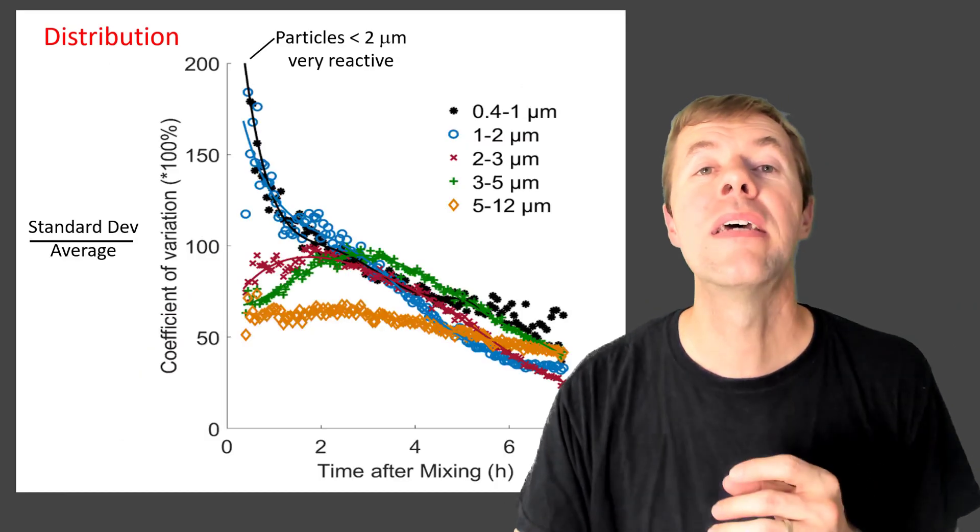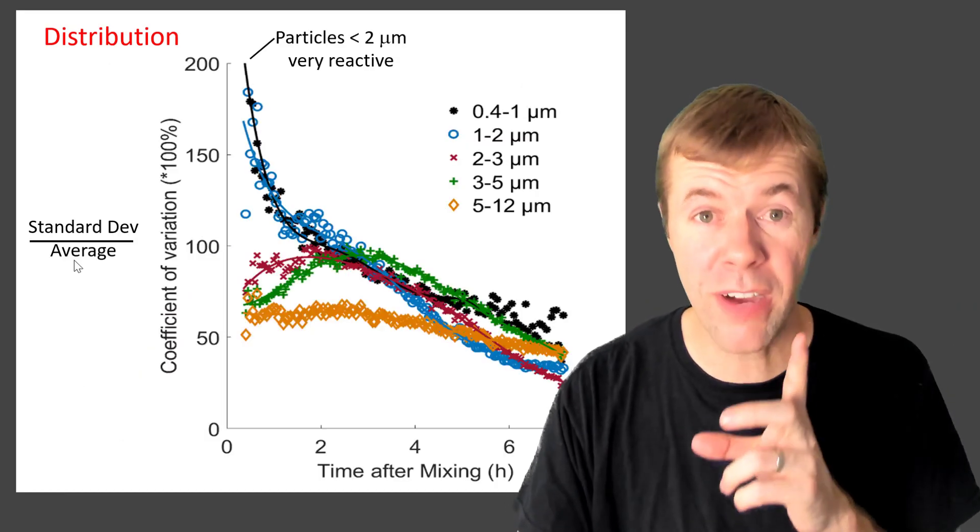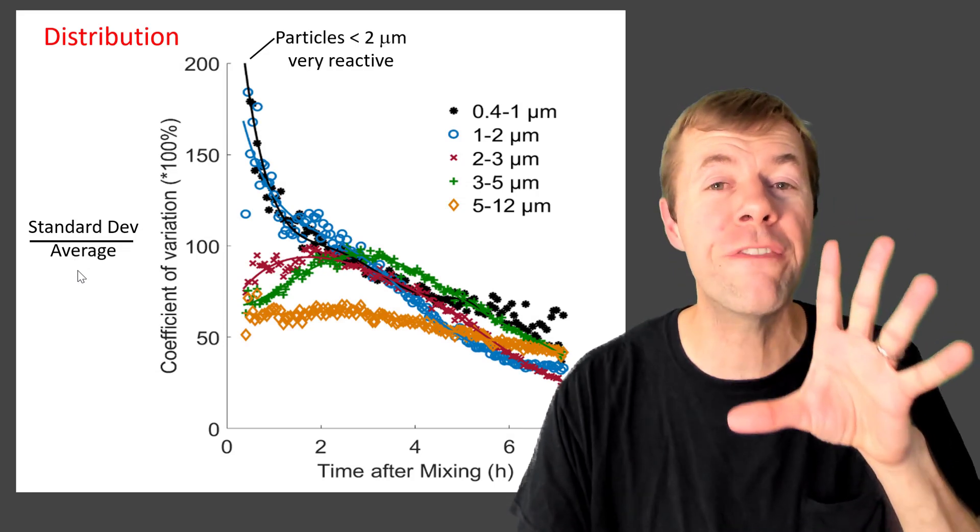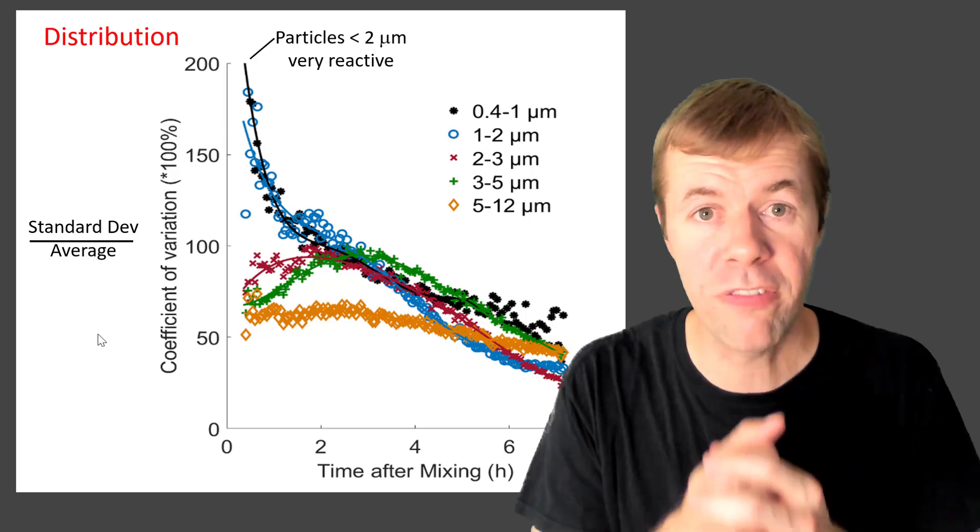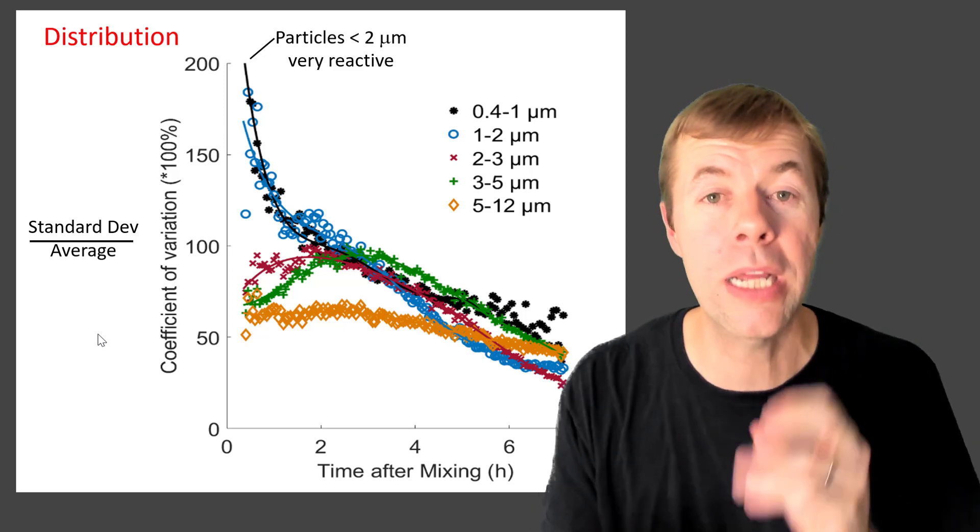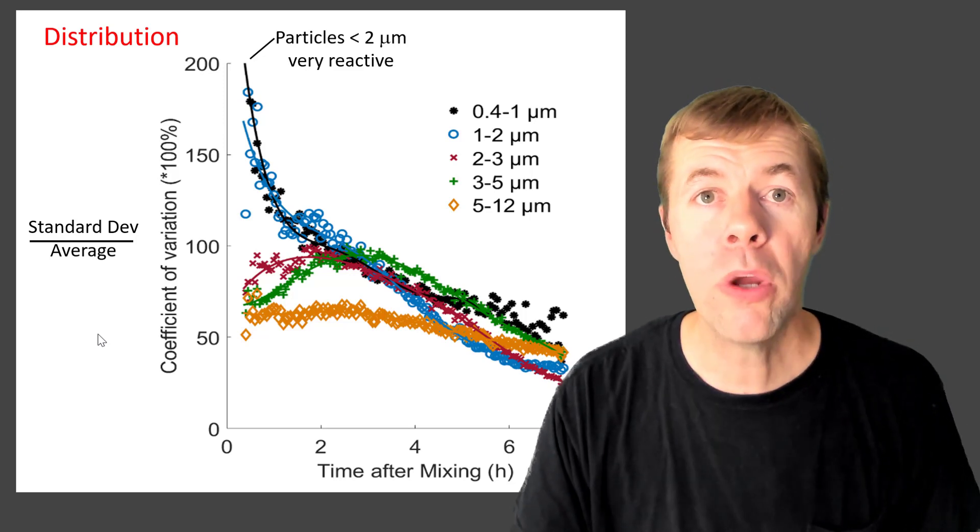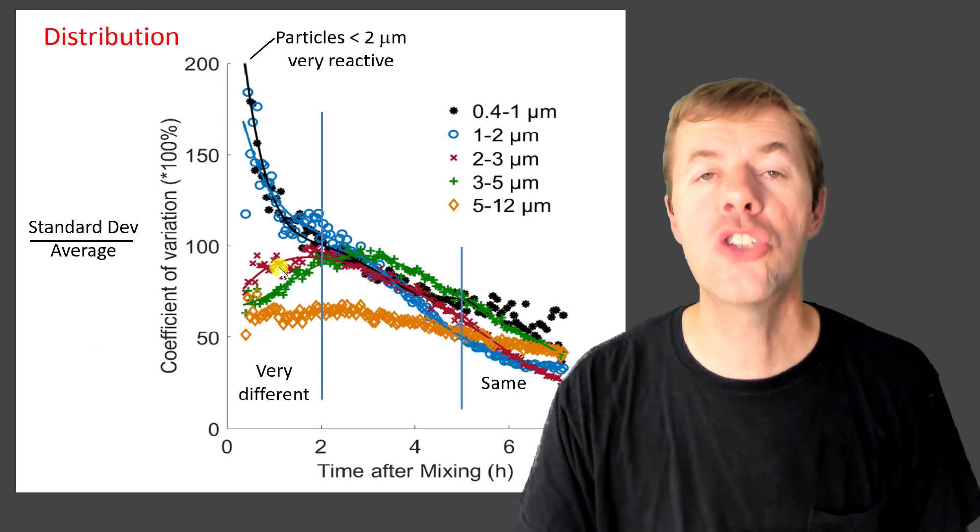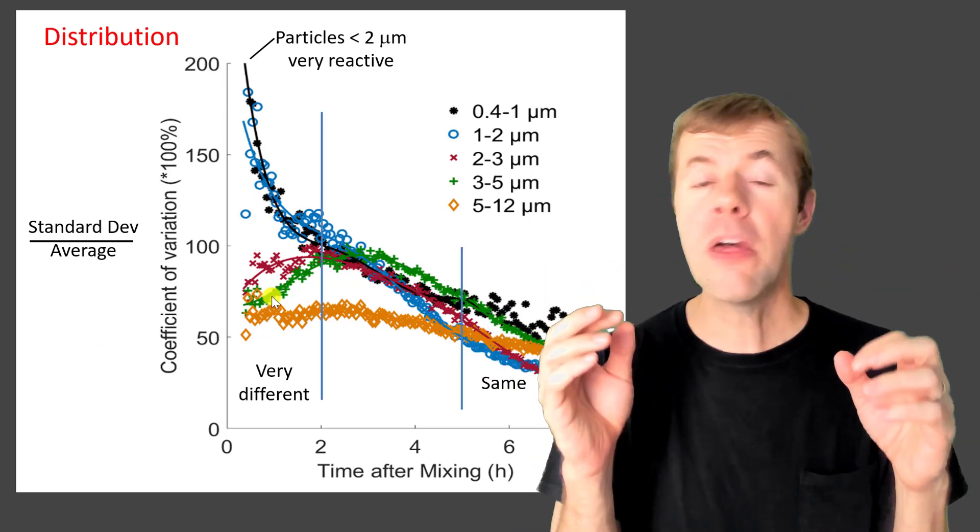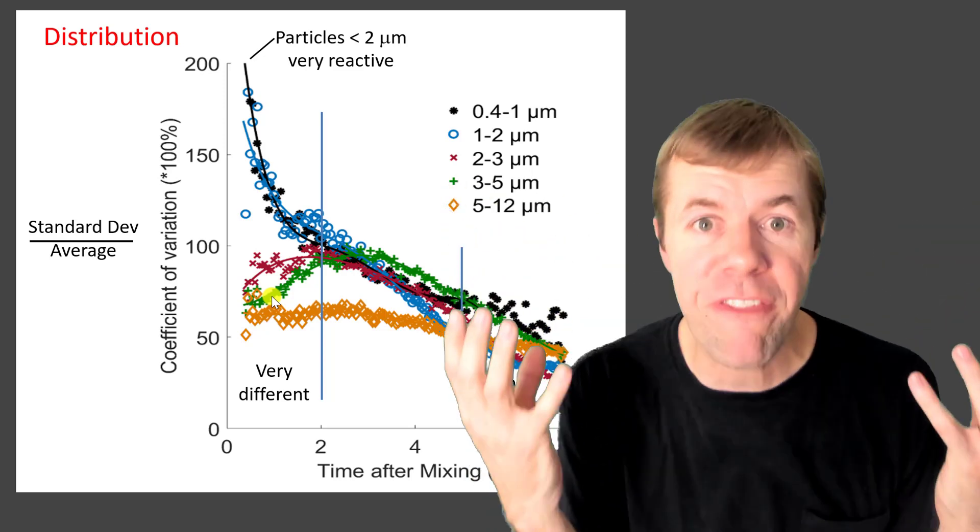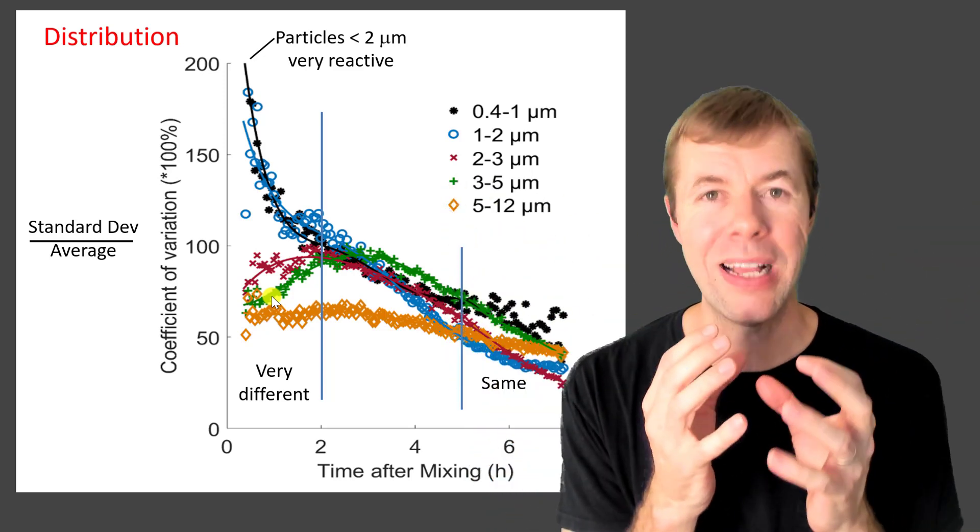So let's plot the standard deviation divided by the average or something that's called the coefficient of variation. I'm taking the variation dividing by the average. It's a nice way to compare things to one another. And what you can see here is in the first two hours, there's a very, very different variation. That means some are wildly different, and then some are less different.